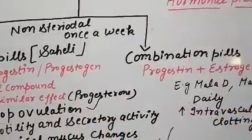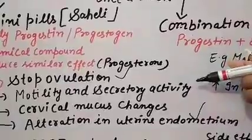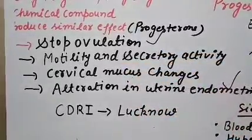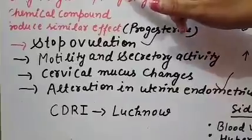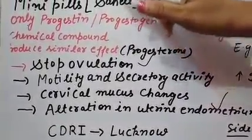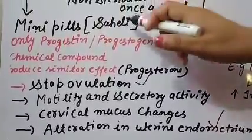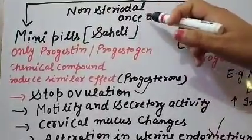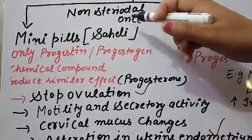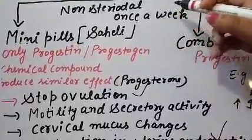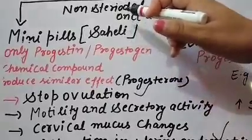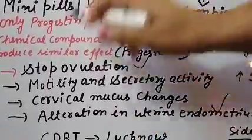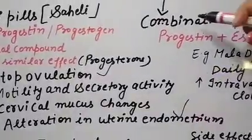So the three main methods by which oral pills work are: stopping ovulation, reducing motility and secretory activity of the fallopian tube, cervical mucus changes, and alteration in the uterine endometrium. In the case of mini pills, Saheli is the best example. It is a non-steroidal pill taken once a week, which makes it safer. It was prepared by CDRI — the Central Drug Research Institute, Lucknow.